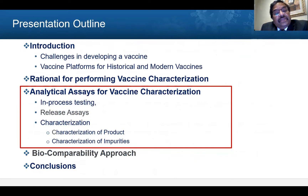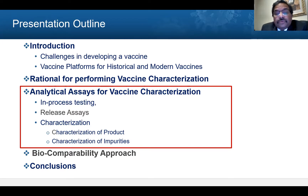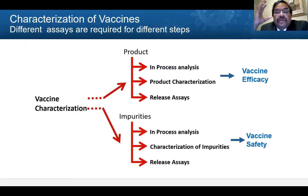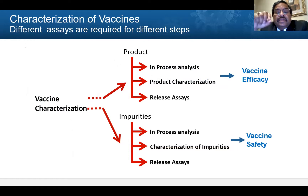In this section, I focus on analytical tools that can be used for vaccine characterization. At different steps, we need different sets of assays. For vaccine characterization, both characterizing the product and characterizing the impurity are very, very critical. Characterizing the product is critical to maintain vaccine efficacy, and characterizing the impurity is critical for vaccine safety.